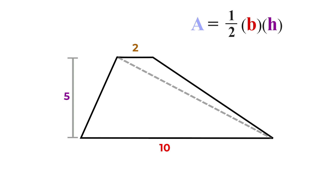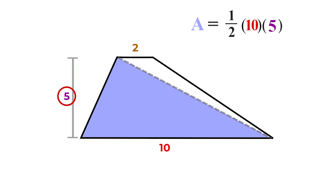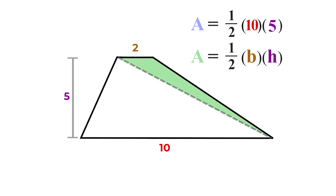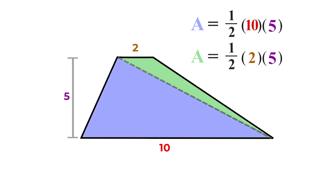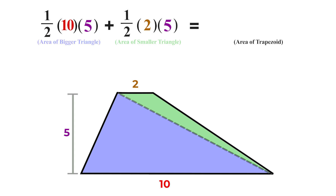We already know the formula for the area of a triangle: one half times base times height. So let's start with the larger triangle first: one half times base 10 (the longer base from the trapezoid) times height 5. For the other triangle, it's one half times base 2 (the shorter trapezoid base) times height 5. An important thing to notice is that both triangles, as well as the trapezoid, all share this same height of 5.